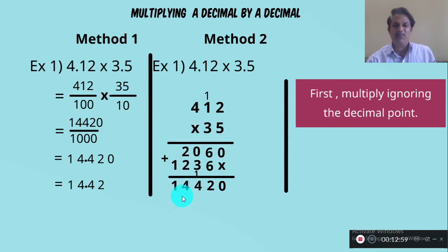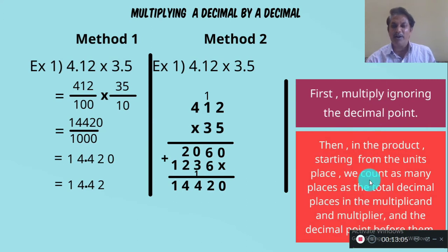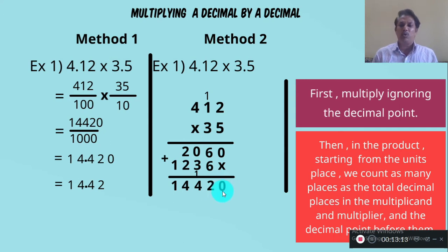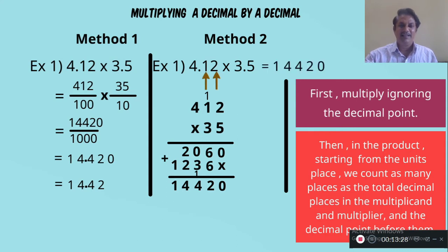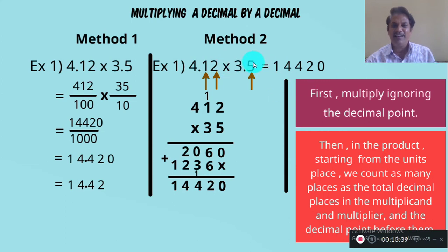The product of 412 and 35 is 14,420. Second step: in the product, starting from the unit place, count as many places as the total decimal places in the multiplicand and multiplier. In the multiplicand 4.12 there are two decimal places, and in the multiplier 3.5 there is one decimal place — so there are three decimal places total. Keep the point so that there are three decimal places in the decimal part.